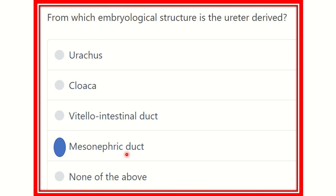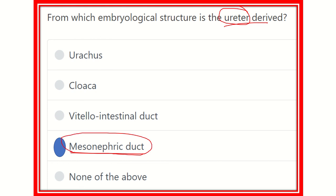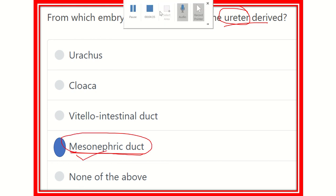Our final answer is the mesonephric duct. If ureteric bud were listed as an option, that would be the answer, but since it is not, the ureter is derived from the mesonephric duct. That is our final answer — the embryological structure from which the ureter is derived is the mesonephric duct. Thank you all.